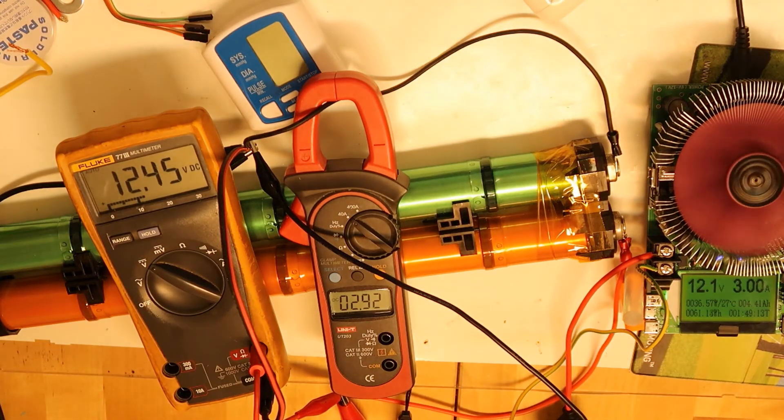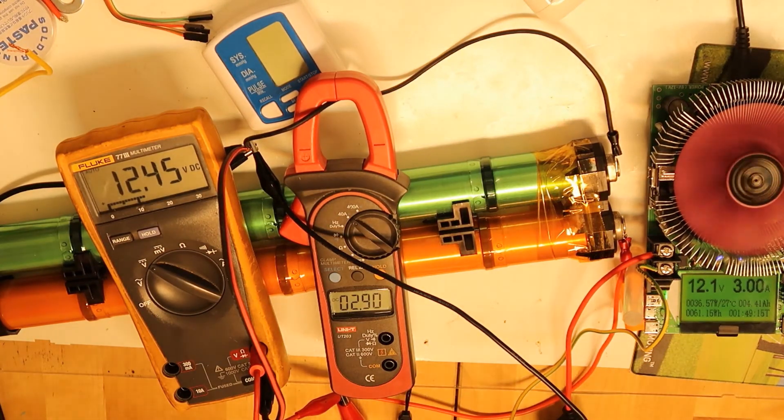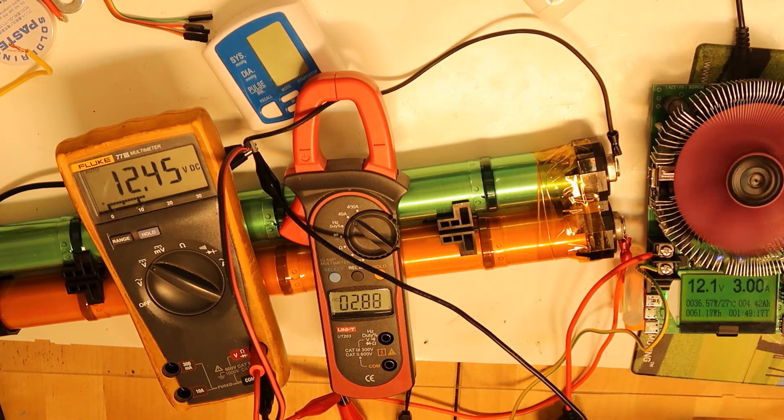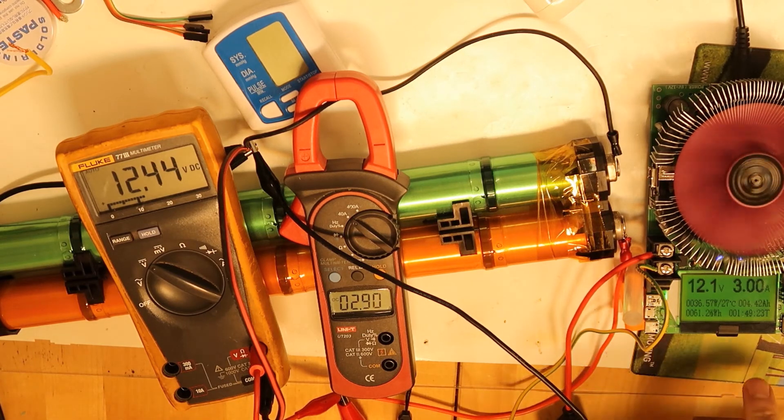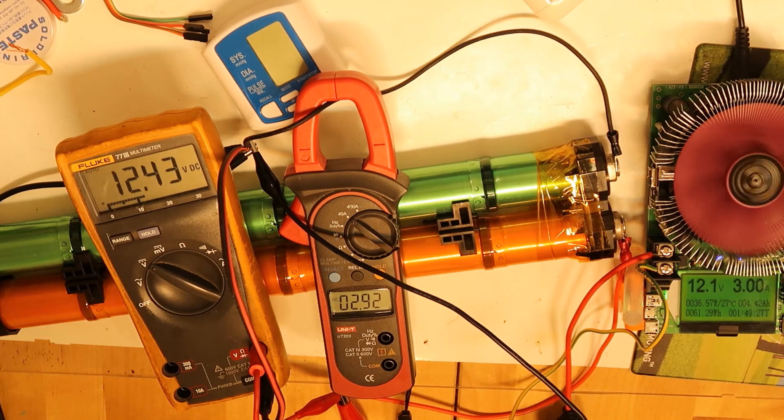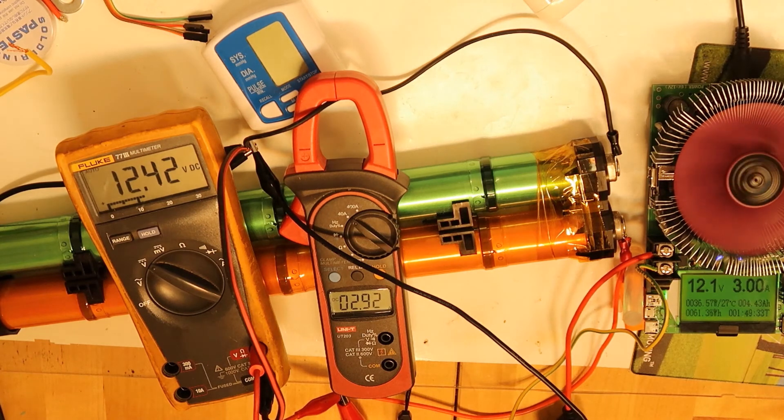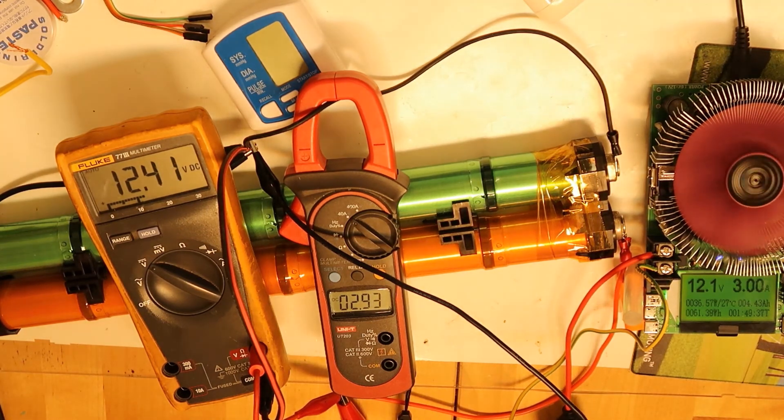Eventually I continued to charge at 3 amps because it's taking too long. So now we can see that we already have 4.42 amp hours and the voltage is 12.43 volts. Which means that the capacity, it looks to me that it will be more than 6 amp hours, but let's continue and see the final results.